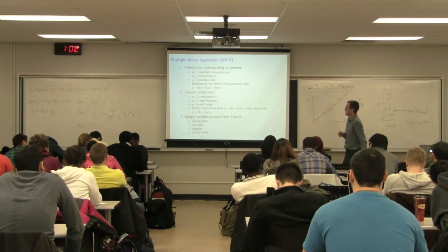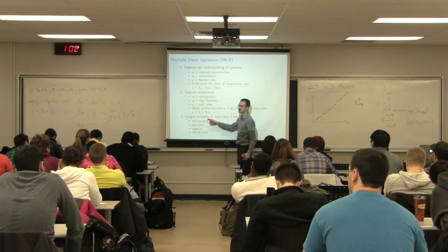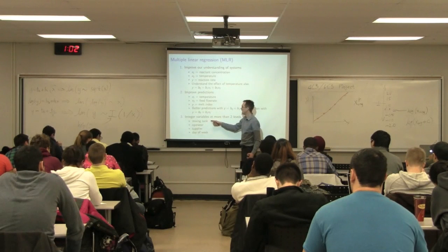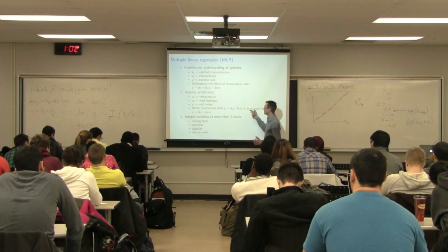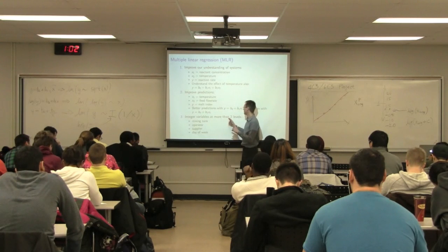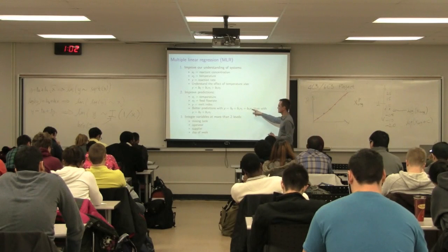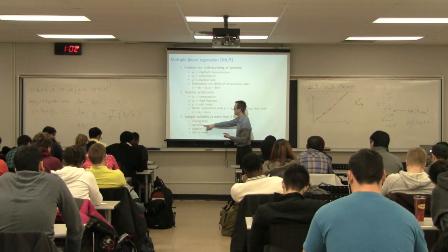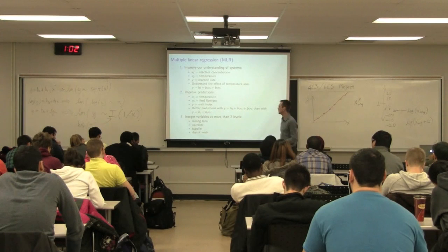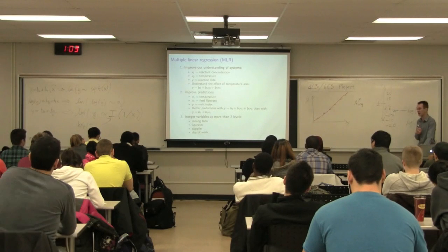Finally, if we're operating a process where there's a discrete variable — an integer variable — such as mixing tank A versus B versus C, I will need more than one term in my model. I can deal with a binary variable with a single x. But when that integer variable has more than two levels, I need to go to multiple terms in my regression model. As long as I've got operator A versus B, I'm okay with a single x. But with operator A, B, and C, I'm going to need to add x1 and x2. Integer variables at more than two levels require multiple terms. I'll show that by example in the next class.